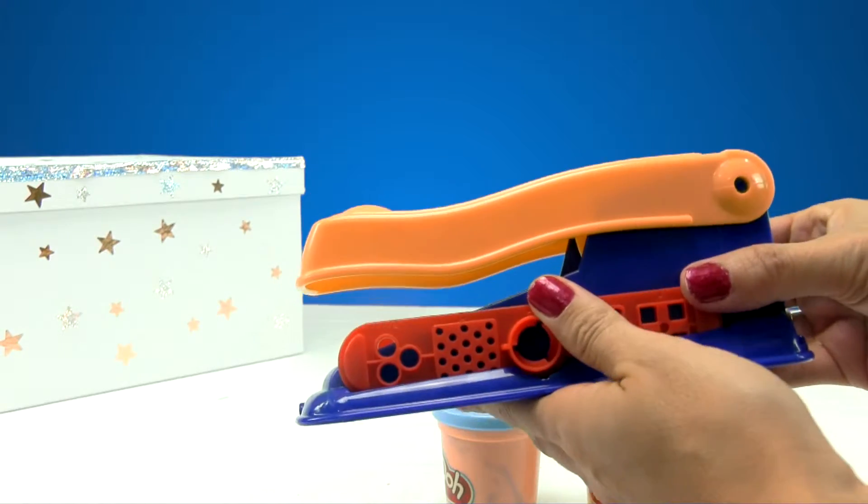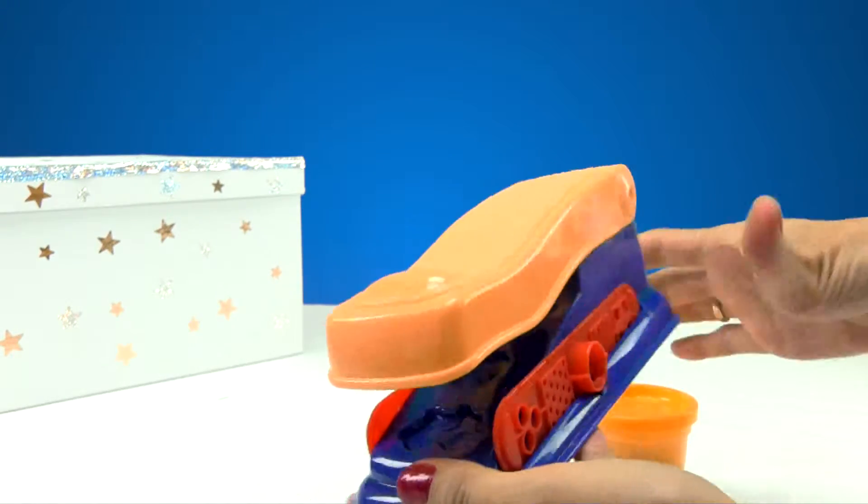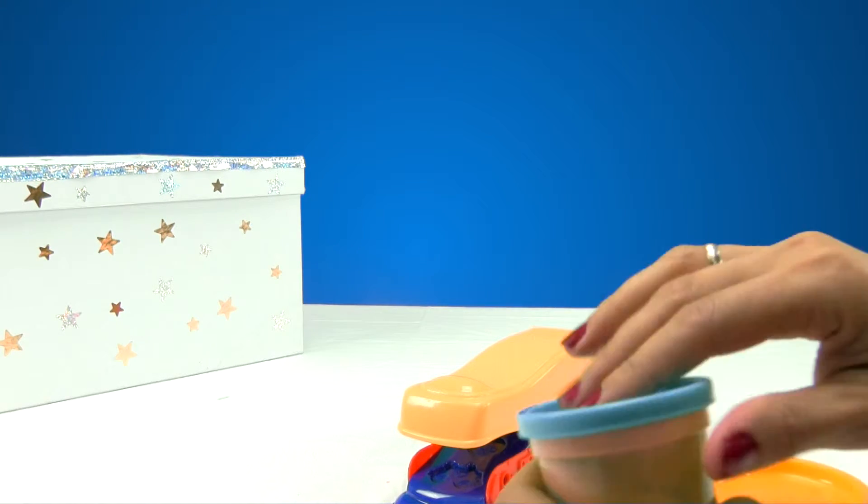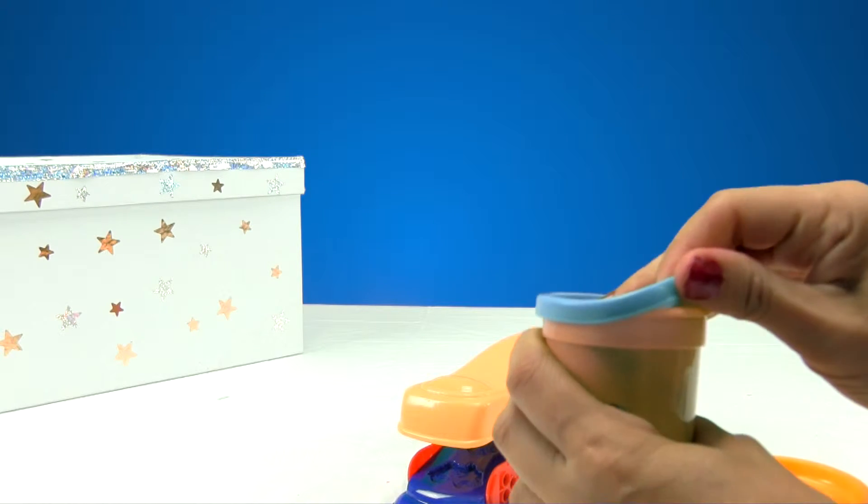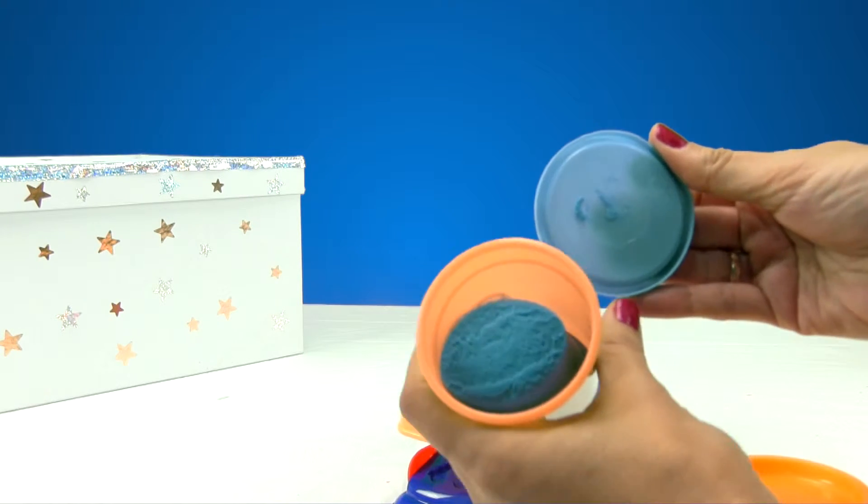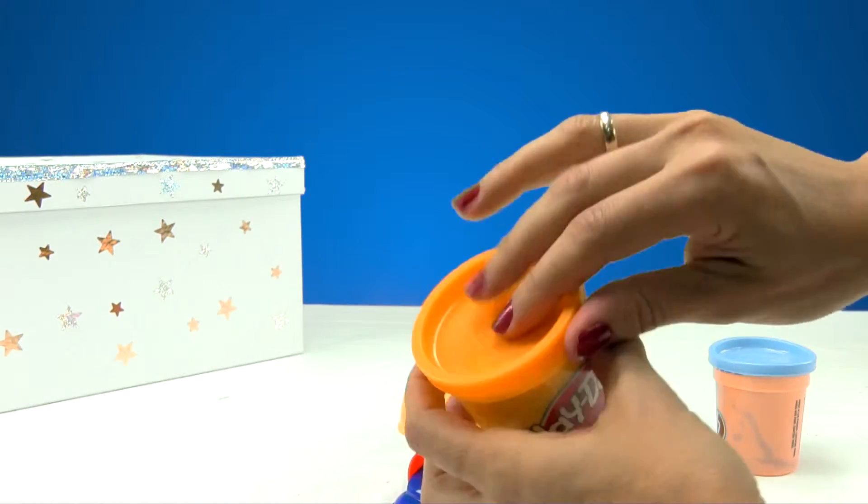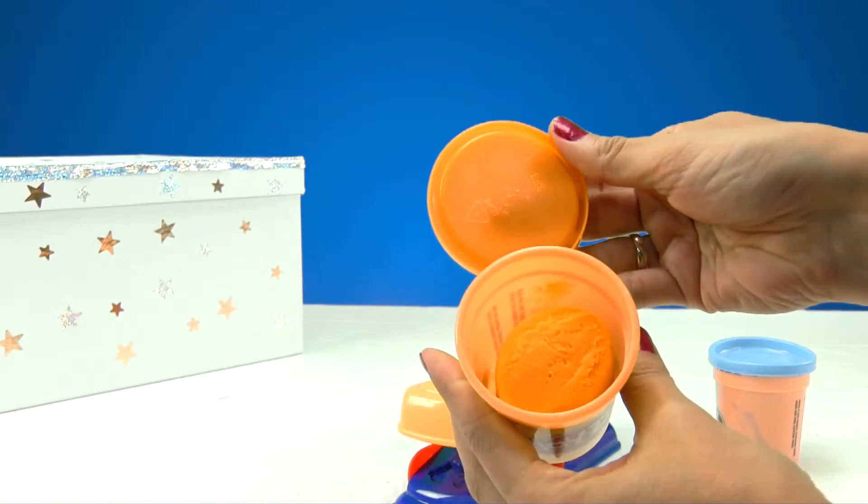Let's see how this machine works. We'll put this mold here. Let's move these containers of Play-Doh out of the way. By the way, I haven't told you what the colors are. Look. This is turquoise. Do you see? It's like a bluish green.